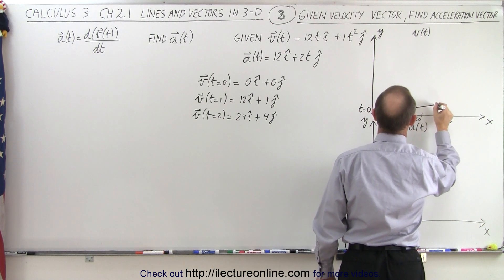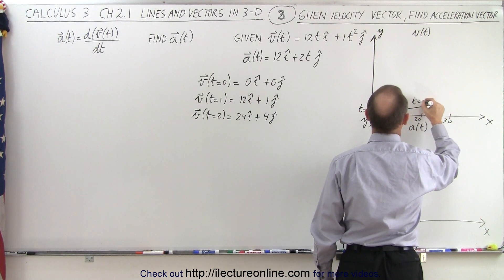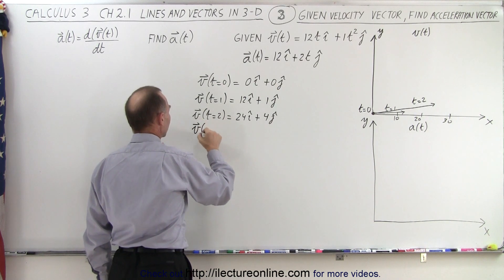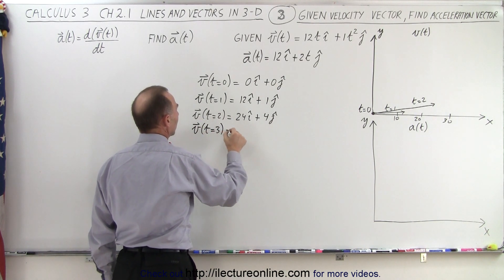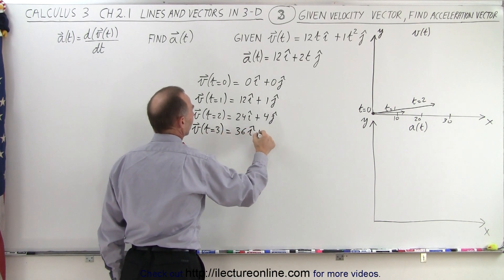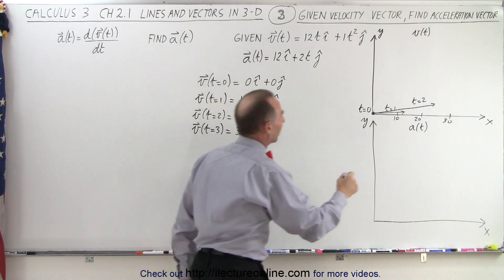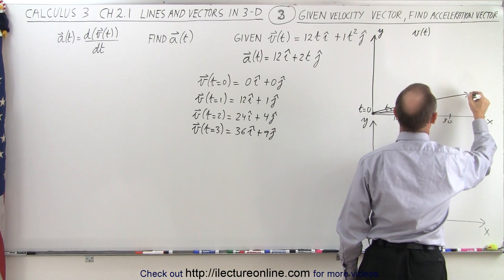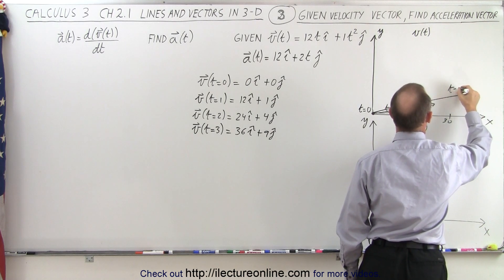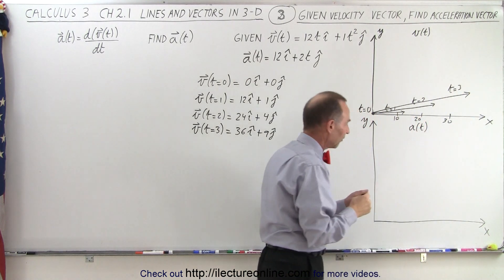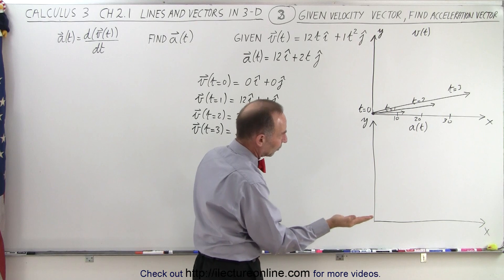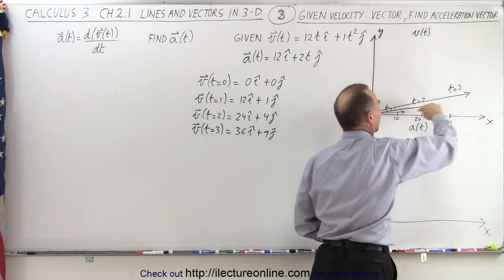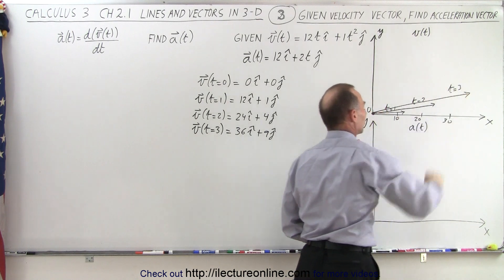At t equal to 2 the velocity vector looks something like this. The velocity when t is equal to 3 is equal to 36i plus 9j, giving us a vector like this for t equals 3. You can see that our velocity started at zero and now starts to increase, which means we're going to have a kind of parabolic path for our position.